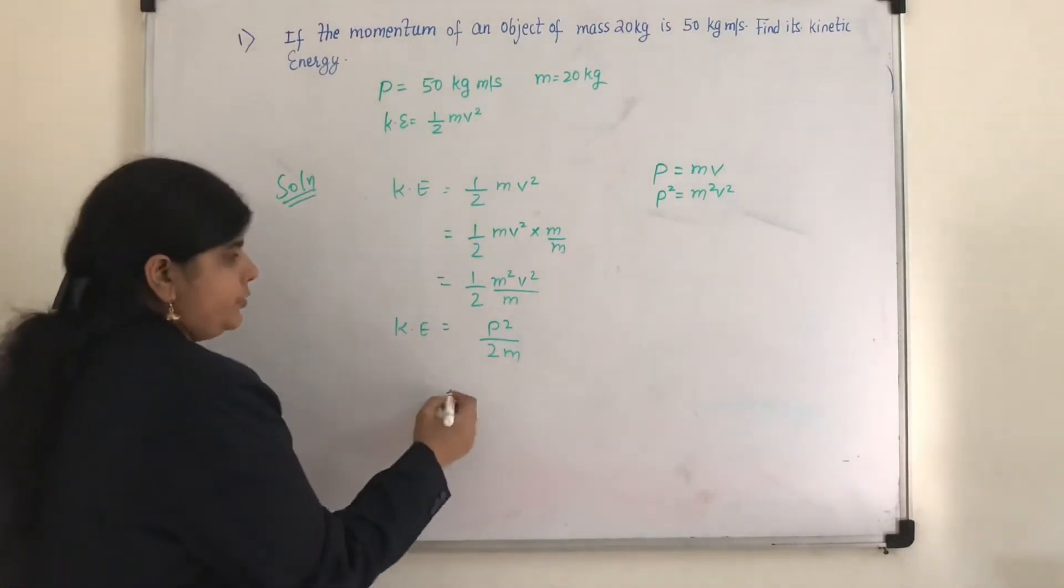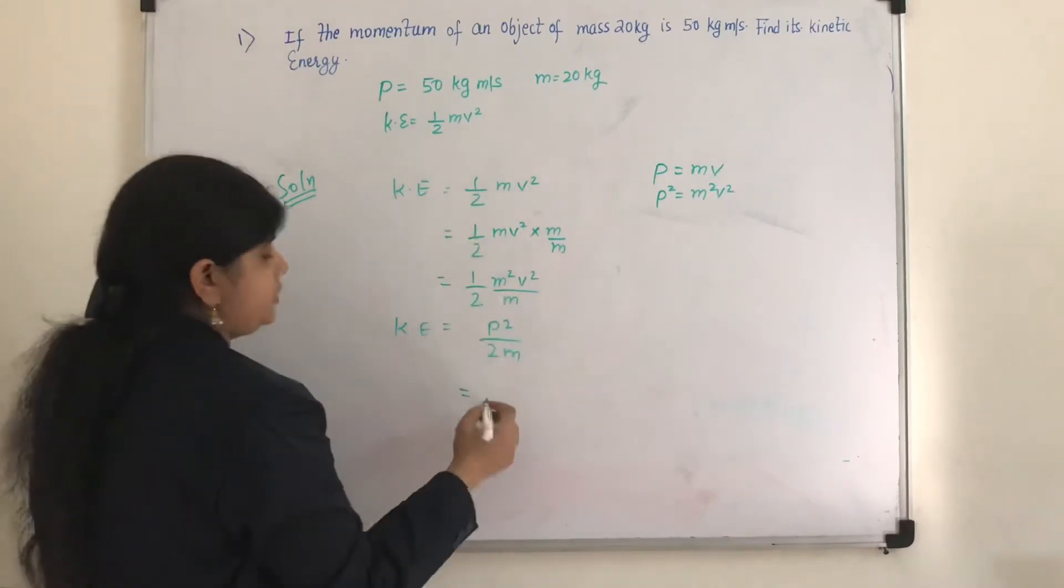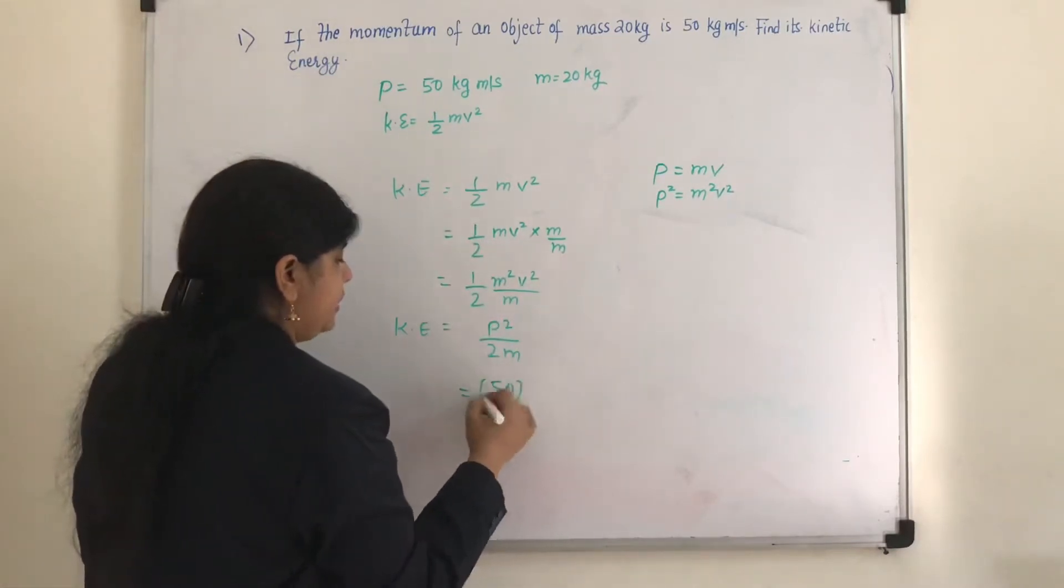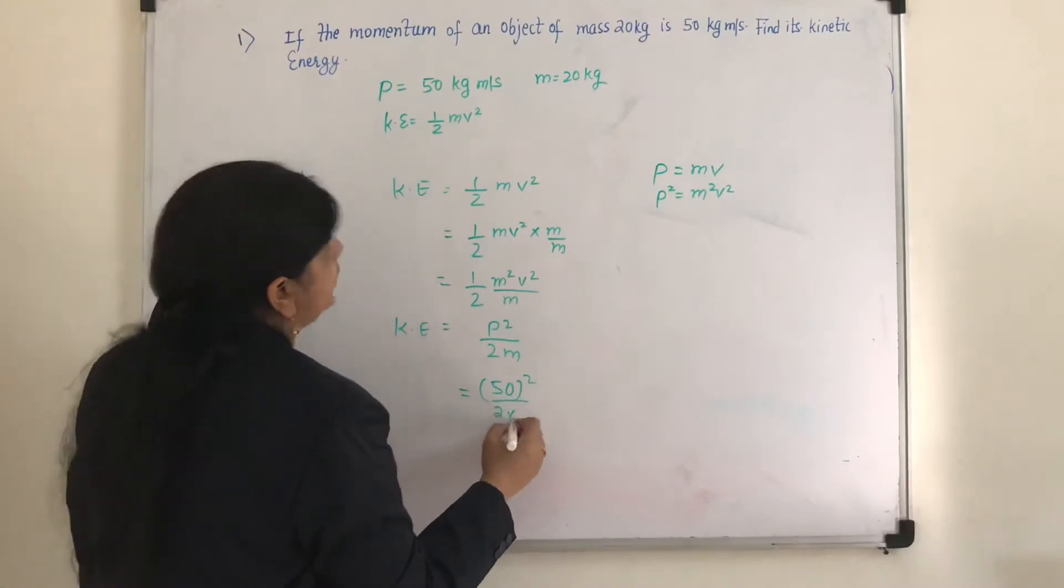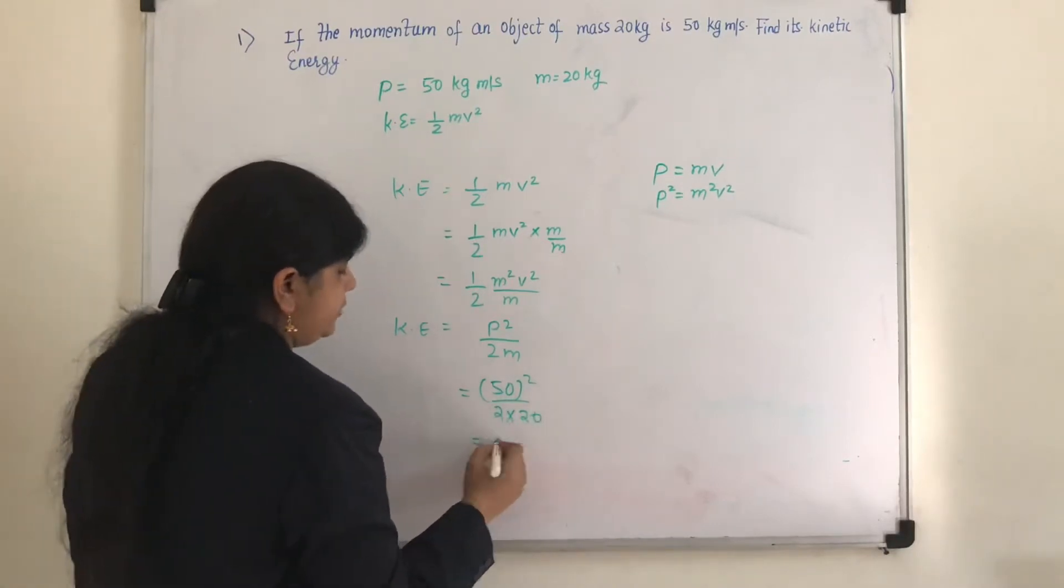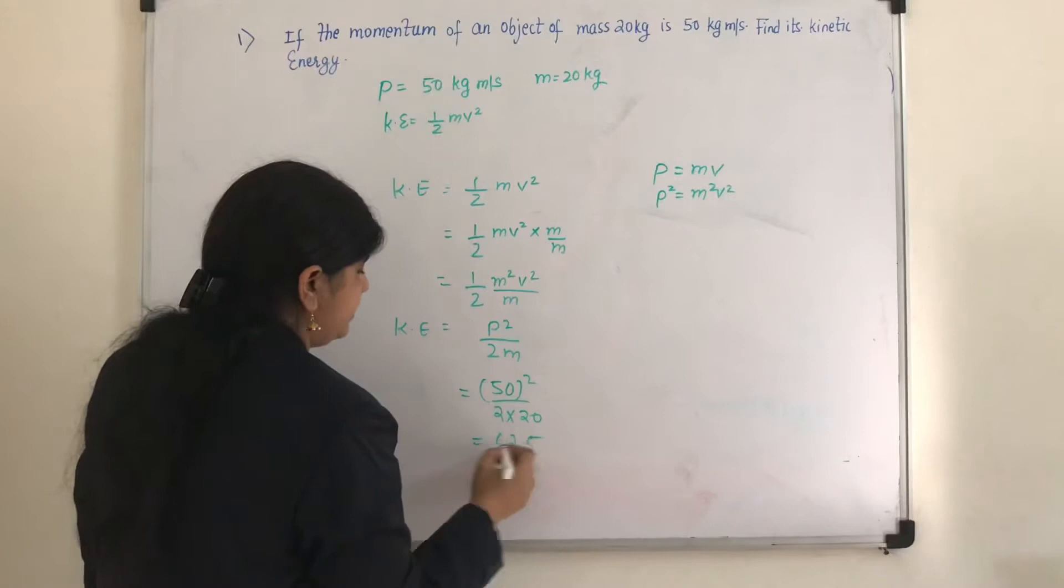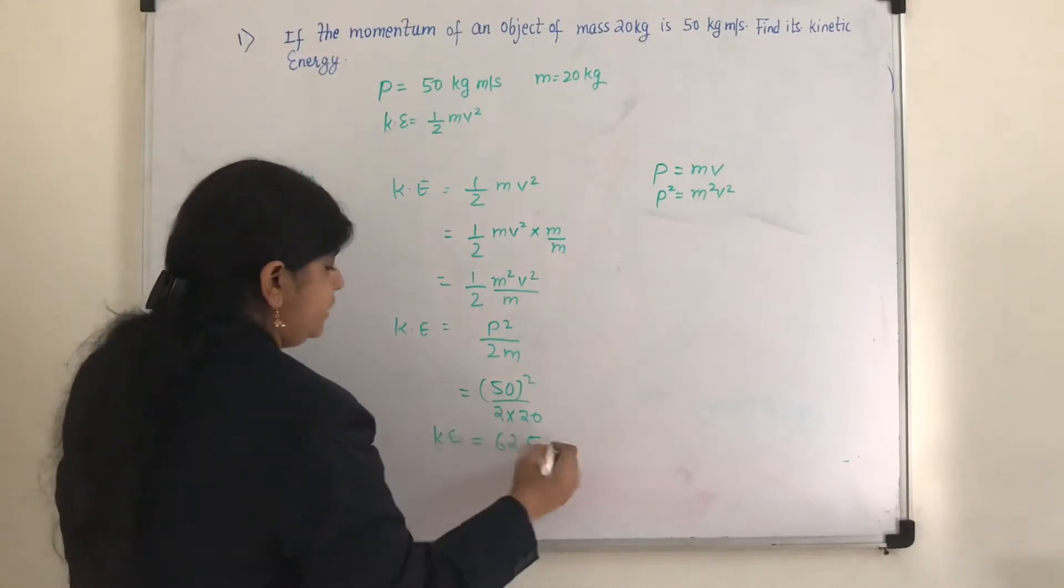So we can substitute for this. This is P square. P square is 50 square upon 2m, 2 into m is 20 kg. When you will substitute you will get 62.5 joules. Kinetic energy is measured in joules.